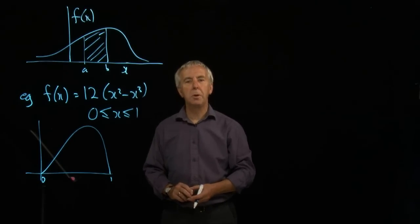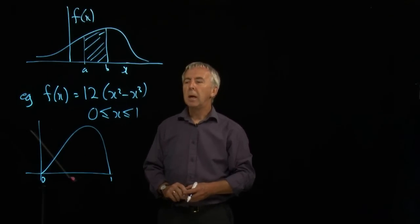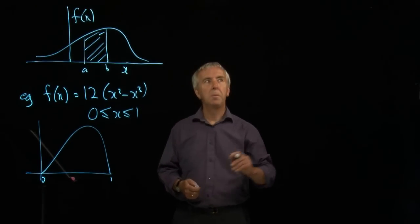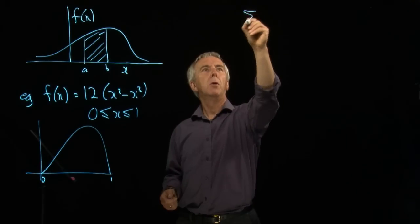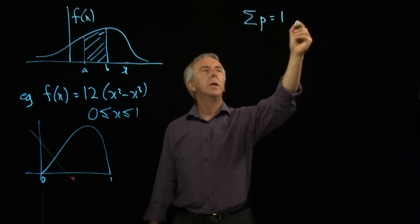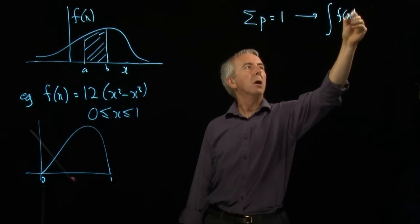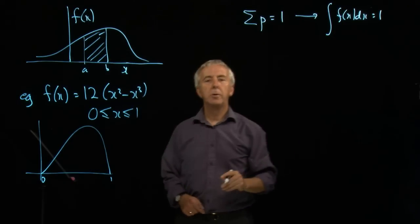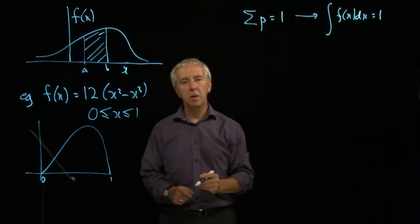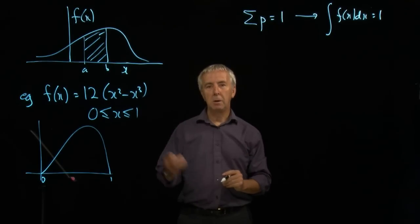What we now want to do is look at how to find the mean of such a distribution. What's the average value of x? We relate it analogously to the discrete variable. With discrete variables, we had Σp = 1. All the probabilities add up to 1. In the continuous case, that becomes the integral of f(x)dx = 1. So the sigma is replaced by the integral, and p is replaced by f(x)dx.